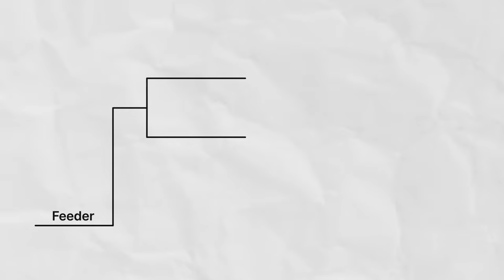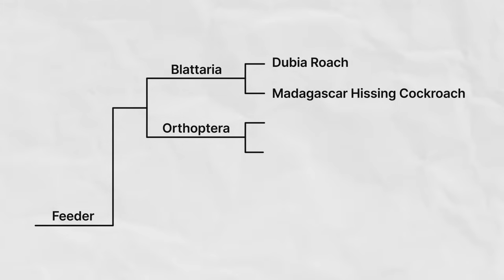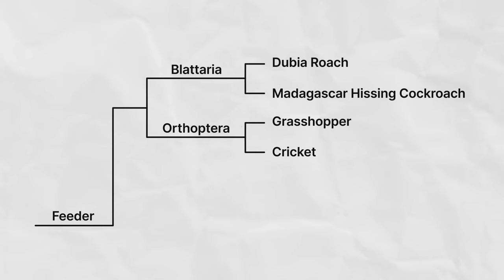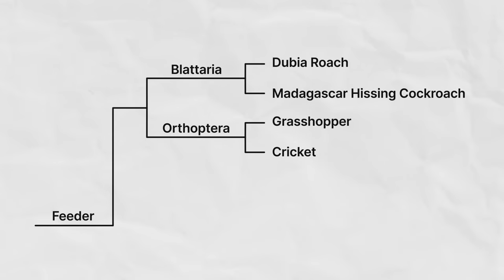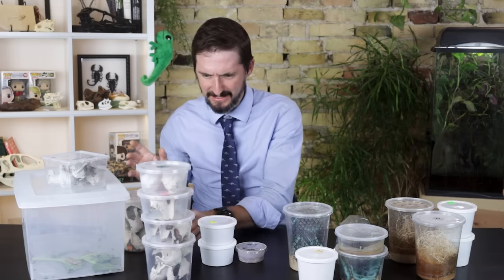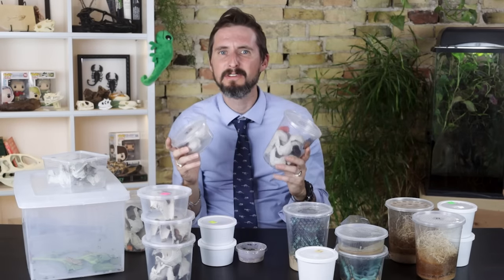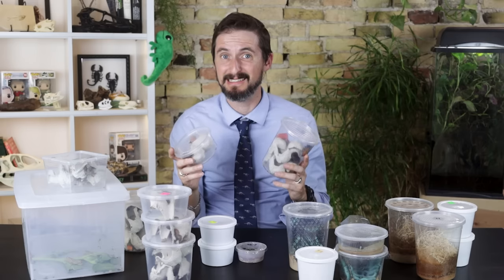Those two clades would be the Blatteria — the cockroaches — and the Orthoptera — the jumping guys like grasshoppers, crickets, and katydids. As the sponsor of today's video is dubiaroaches.com, I think it makes sense to start with the roaches. These right here are my two favorite cockroach species to keep.